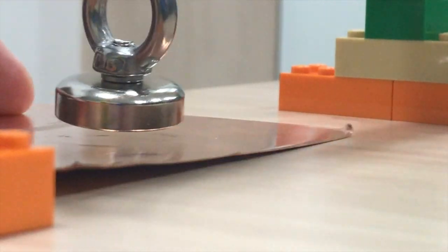Moving the copper sheet to and fro at a certain frequency, the magnetic pendulum can be made to oscillate again.